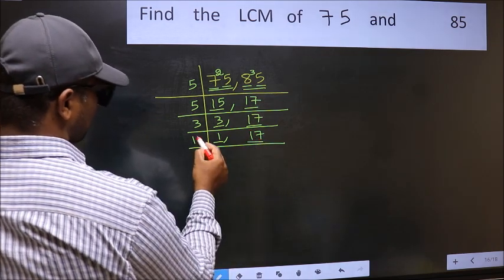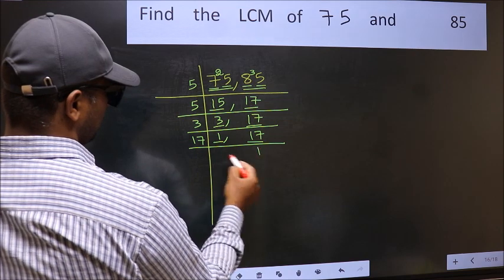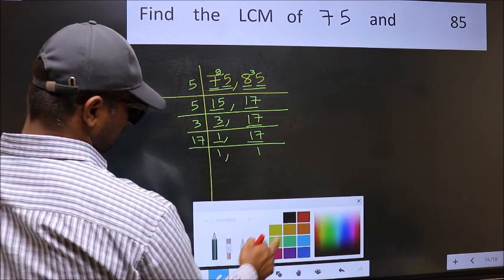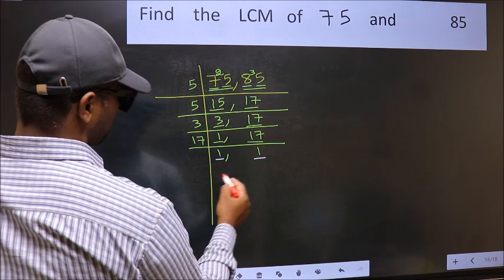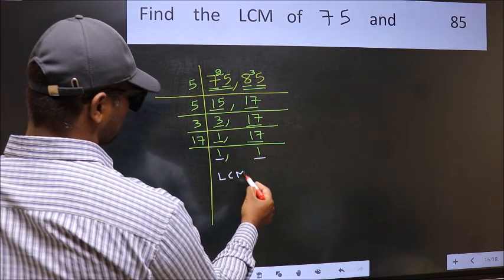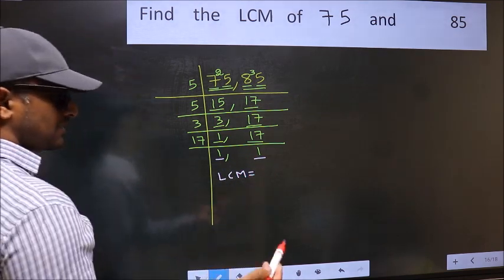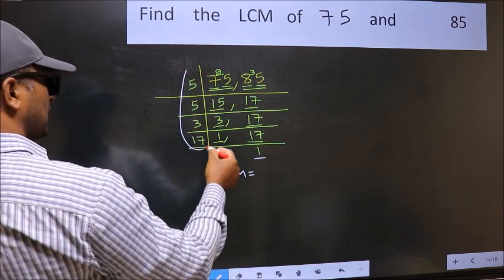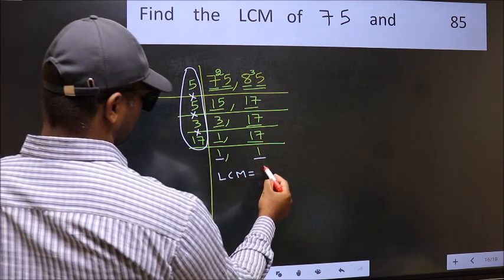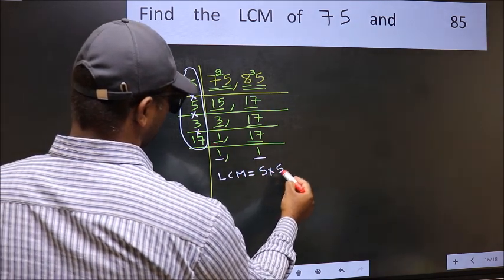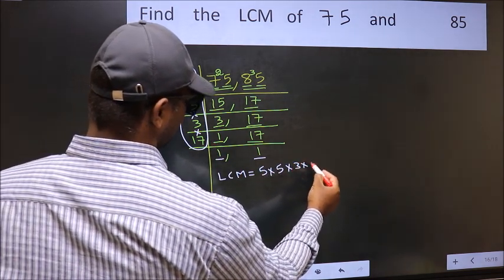17 is a prime number, so 17 once 17. So we got 1 in both places. So our LCM is the product of these numbers: 5 into 5 into 3 into 17.